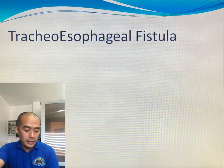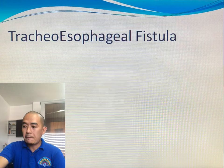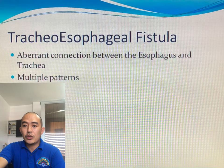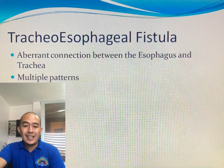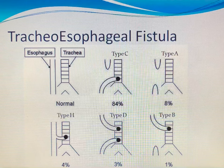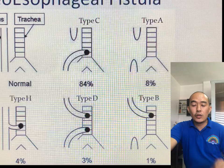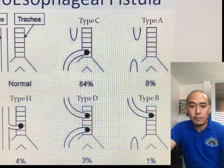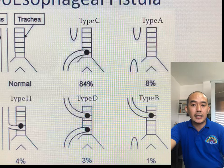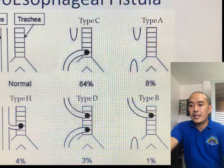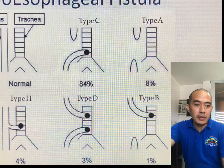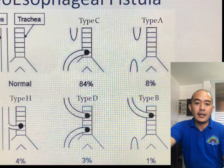Tracheoesophageal fistula can also be diagnosed through flexible tracheoscopy. This is a condition where an abnormal connection between the esophagus and the trachea exists. It has several patterns: Type C, Type A, Type H, Type D, and Type B — some books label these as 1, 2, 3, 4, and 5. The most common form is a blind sock pocket in the esophagus proximally and a distal esophageal-tracheal fistula. The least common is the reverse: a proximal connection of the esophagus to the trachea with a distal blind pocket.